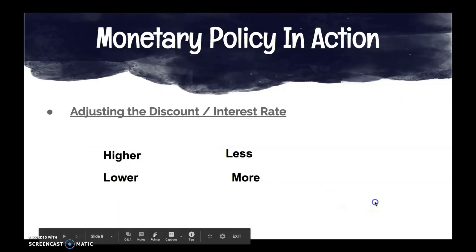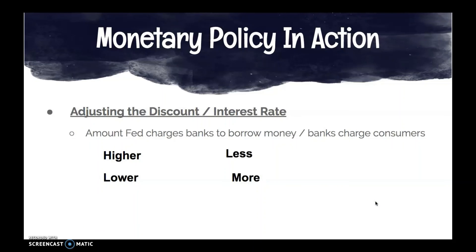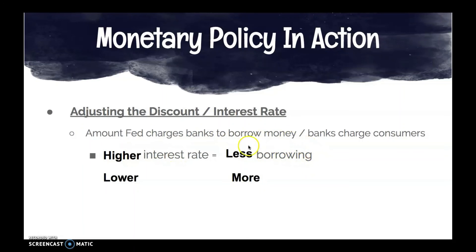Similarly, adjusting the discount and interest rate — the amount the Fed charges banks to borrow money, which banks then charge consumers — also affects circulation. If we increase or raise interest rates, less borrowing happens. You're more likely to take out a loan if you only have to pay back 1% versus 5%, since that changes the total amount you have to pay back.